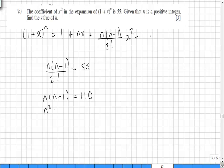Expanding the bracket we get n squared minus n is equal to 110. So n squared minus n minus 110 is equal to 0.